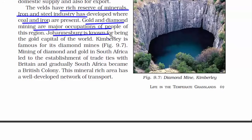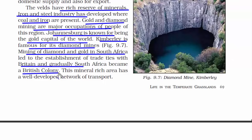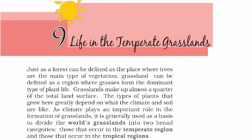Johannesburg is known as the gold capital of the world, and Kimberley is famous for its diamond mines. Because of these natural resources, the British got interested in this region and made South Africa one of their colonies. Where there is rich mineral wealth, that place is bound to have a well-developed network of transport.